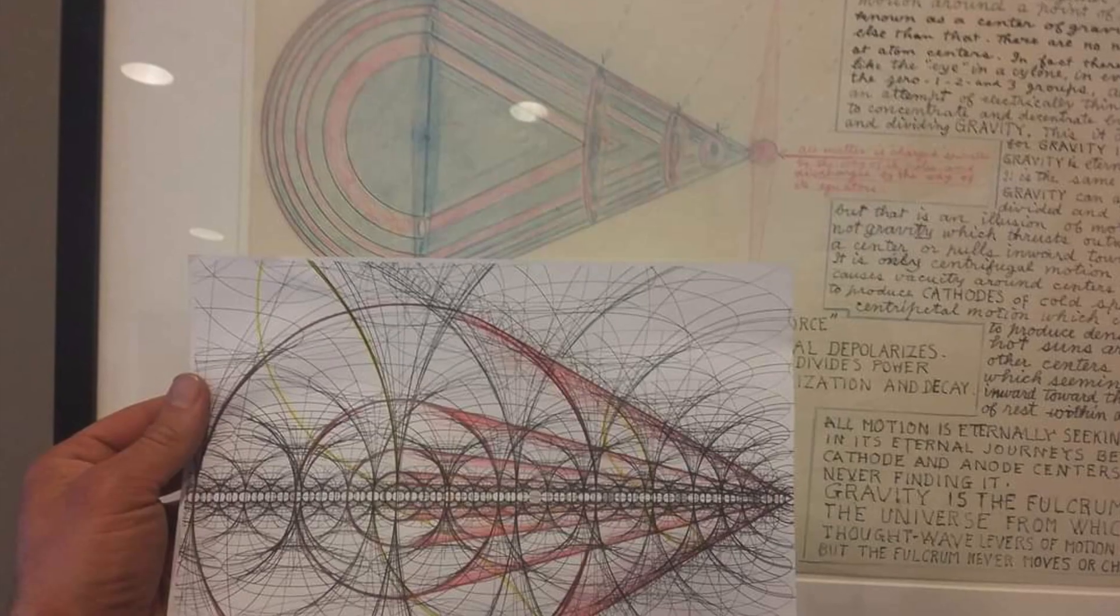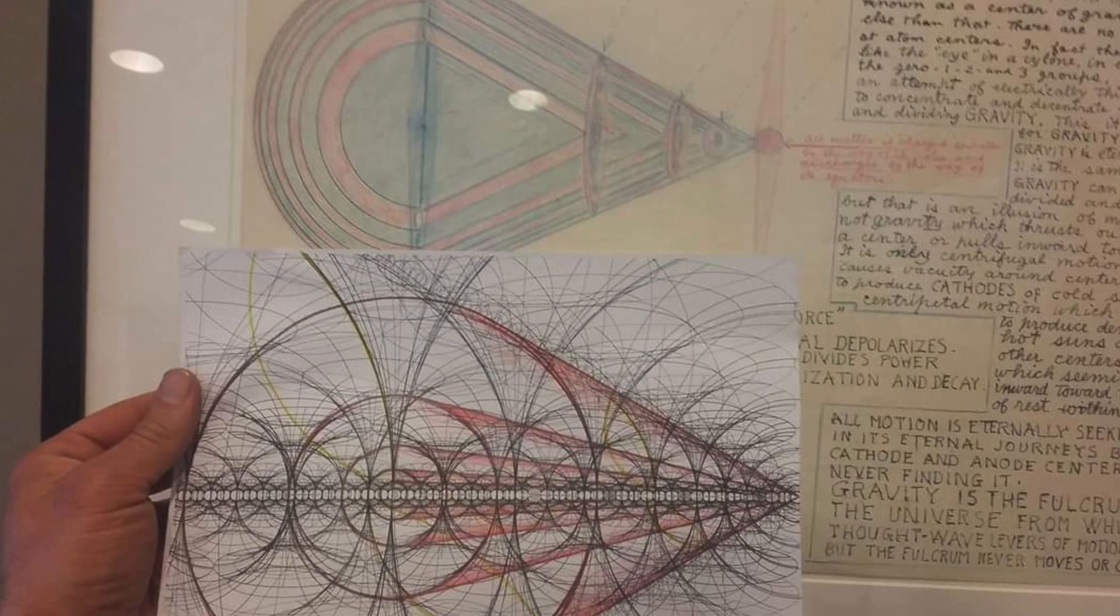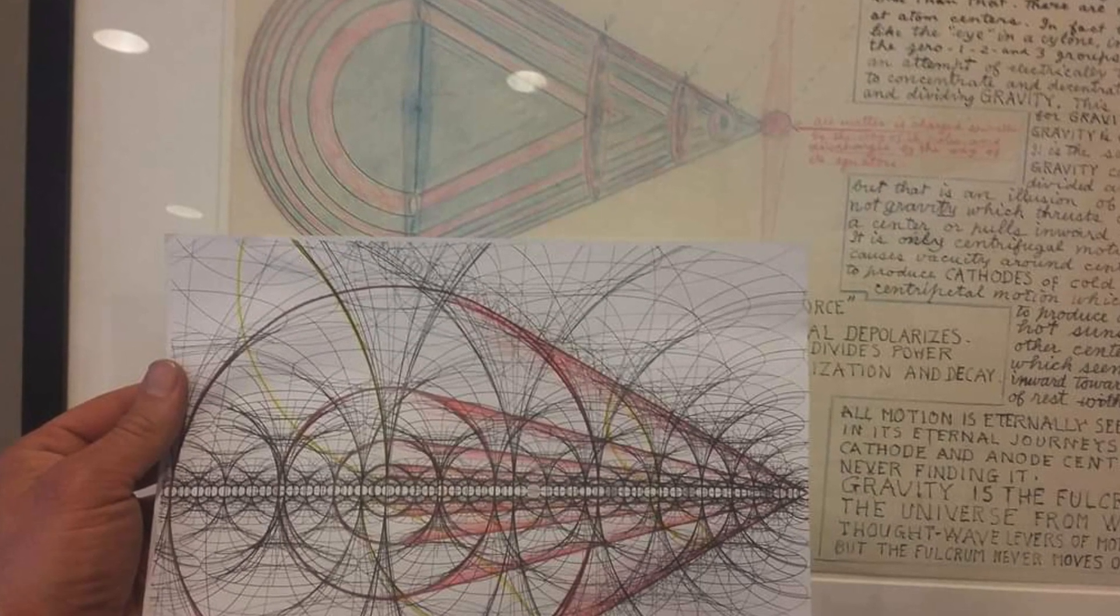In physics, the zitterbewegung—jittery motion in German—is the predicted rapid oscillatory motion of elementary particles. Speaking of electromagnetism being the primal organizer of elements along cylindrical coaxial filaments, we'll hop directly into artist Dr. Walter Russell's work.